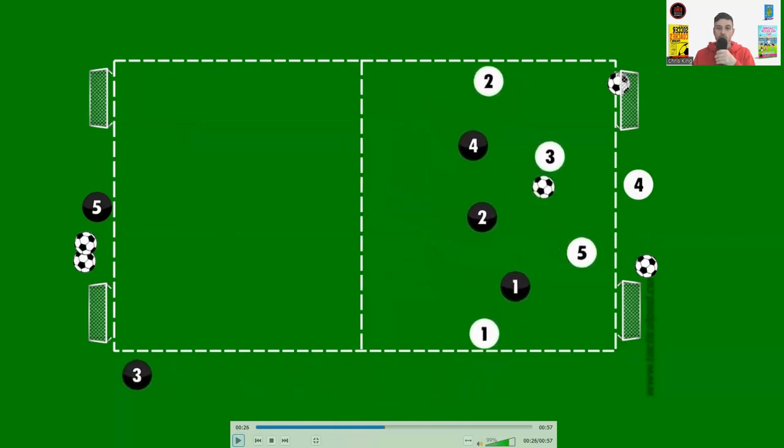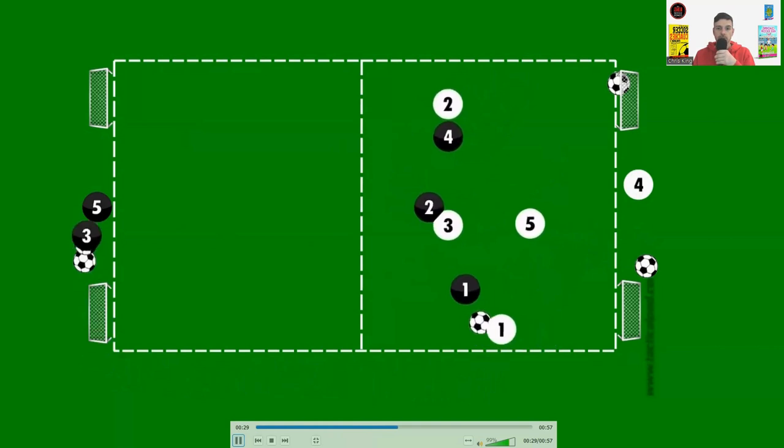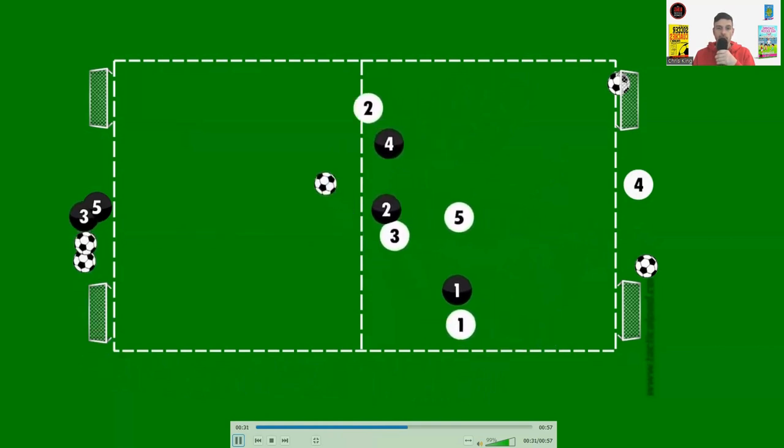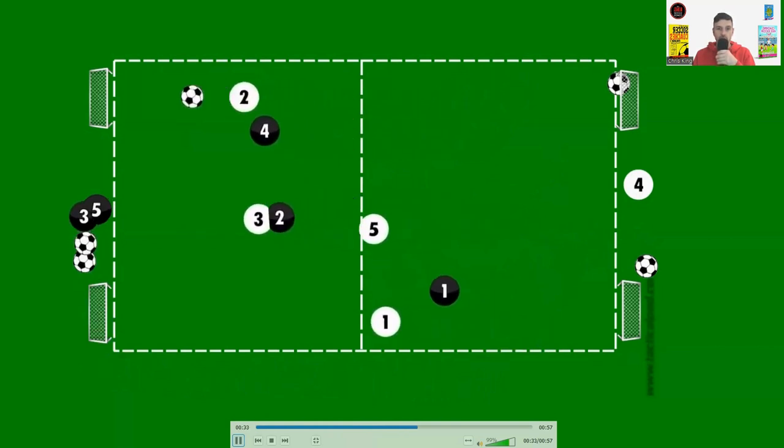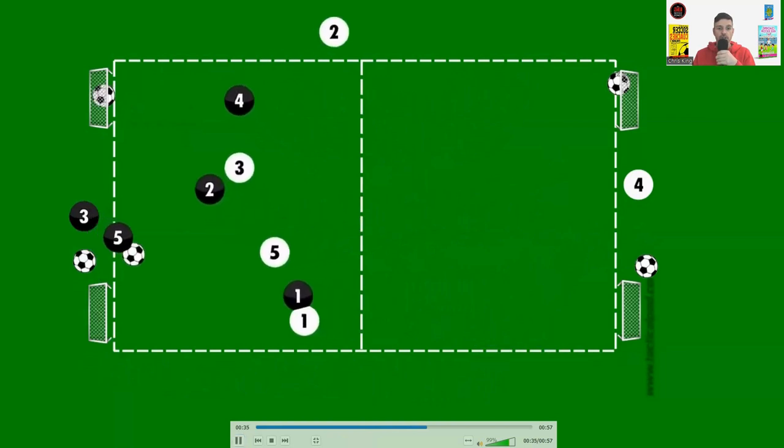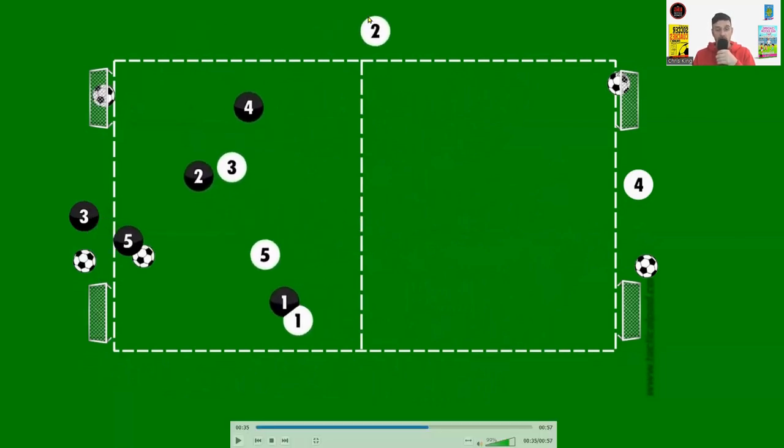A great through ball to number 2. Number 2 scores. Number 2 was the highest, furthest player, so they peel off and a new black player comes on.